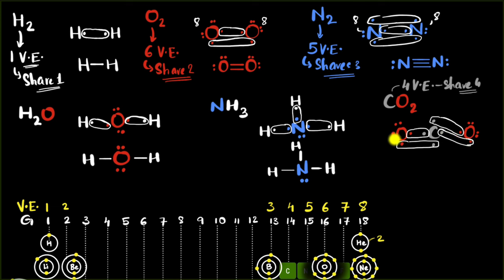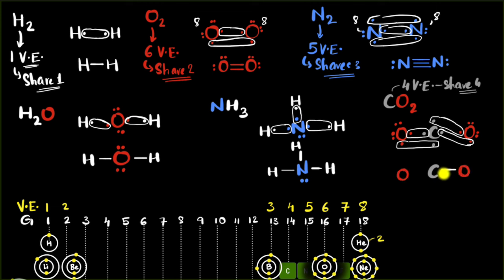Carbon forms a double bond with each oxygen atom. Counting the electrons: carbon has access to eight, and each oxygen has access to eight — octet rule satisfied for all three atoms. The final Lewis structure is O=C=O, a double bond on each side. Do not forget the lone pairs on each oxygen — two lone pairs on the left oxygen and two lone pairs on the right. There are no lone pairs on the carbon. That was fun!